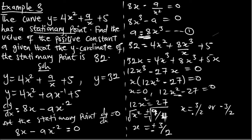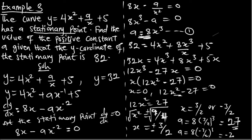Substituting x = 3/2 into a = 8x³: a = 8(3/2)³ = 27, which is positive. Substituting x = -3/2 gives a = -27, which is negative and not accepted. Therefore a = 27. You can verify by substituting a = 27 back and checking the y-coordinate equals 32.